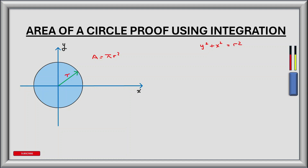Let's rearrange this equation to get it in terms of y. So if we start with y squared is equal to r squared minus x squared, then y is equal to plus or minus the square root of r squared minus x squared.